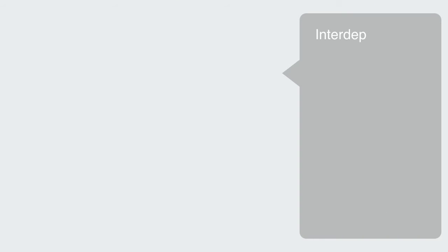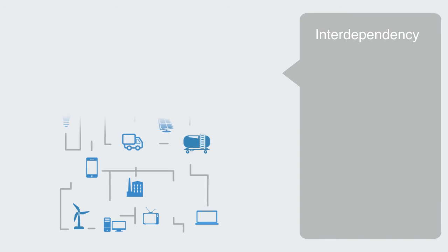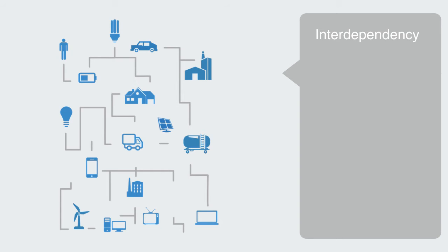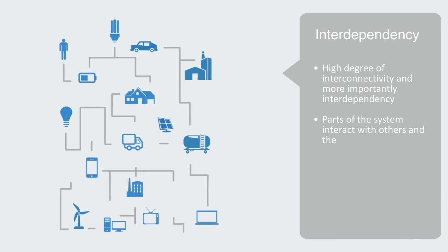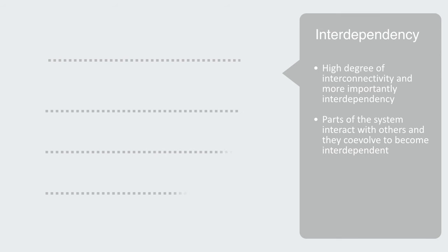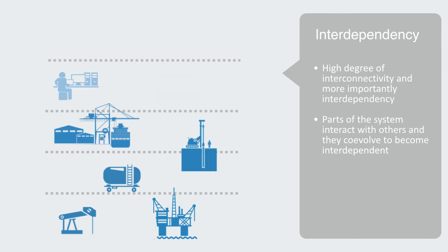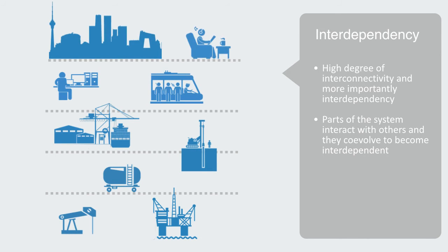Path dependency is particularly acute in complex systems because of their high degree of connectivity and, more importantly, interdependency. Things don't happen in isolation. During the system's development, parts of the system interact with others and they co-evolve to become interdependent. Path dependency is particularly acute in these complex engineered systems because of their hierarchical structure — they are multi-tiered, with end-user technologies depending upon infrastructure technologies lower down the solution stack. They are what is called platform technologies.